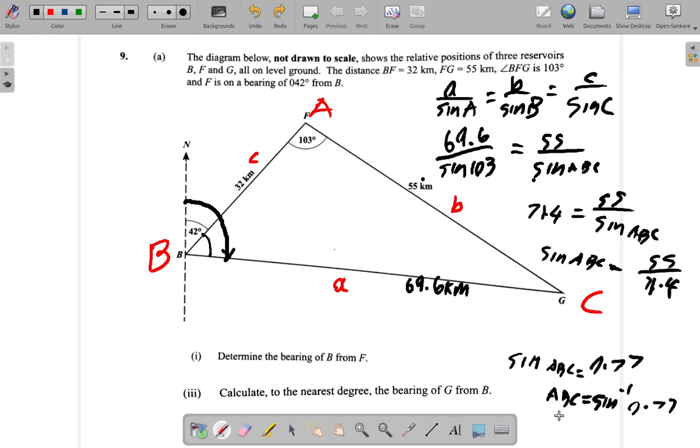So ABC is 50.35. Now that's this angle here, right here. It's 50.35. I need to add it to the 42 now to get the entire bearing.